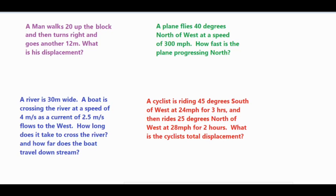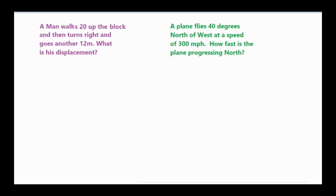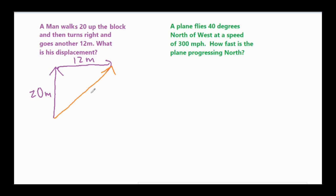We'll work our way to the slightly more difficult ones afterwards. When you're working on vector problems, it is definitely important that you draw a diagram of exactly what you're reading. The problem says a man walks 20 meters up the block and then turns right and goes another 12 meters. Anytime you connect vectors you always use the tip-to-tail method, which means wherever one vector ends is where the next one starts. The displacement is the distance from the very beginning of the first vector to the end of the last one — we call that delta x. All you have to do is use the Pythagorean theorem: a squared plus b squared equals c squared, and solve for delta x.